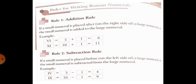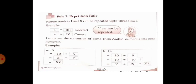The next rule is the Subtraction Rule: if a small numeral is placed before — that is, on the left side of — a large numeral, then the small numeral is subtracted from the large numeral. For example, the number 4 is split as 5 minus 1. So I placed before V gives IV, which represents 4.